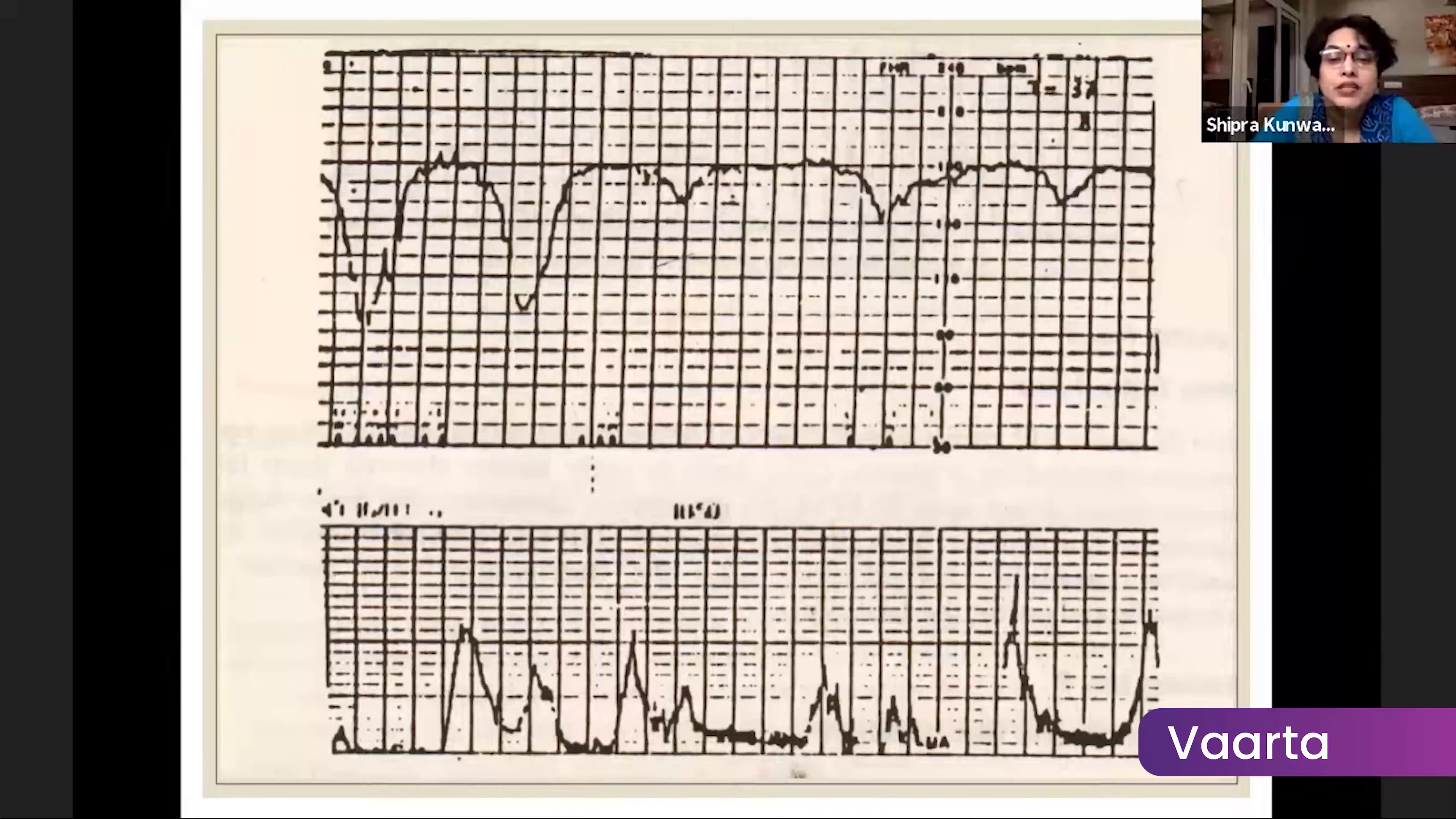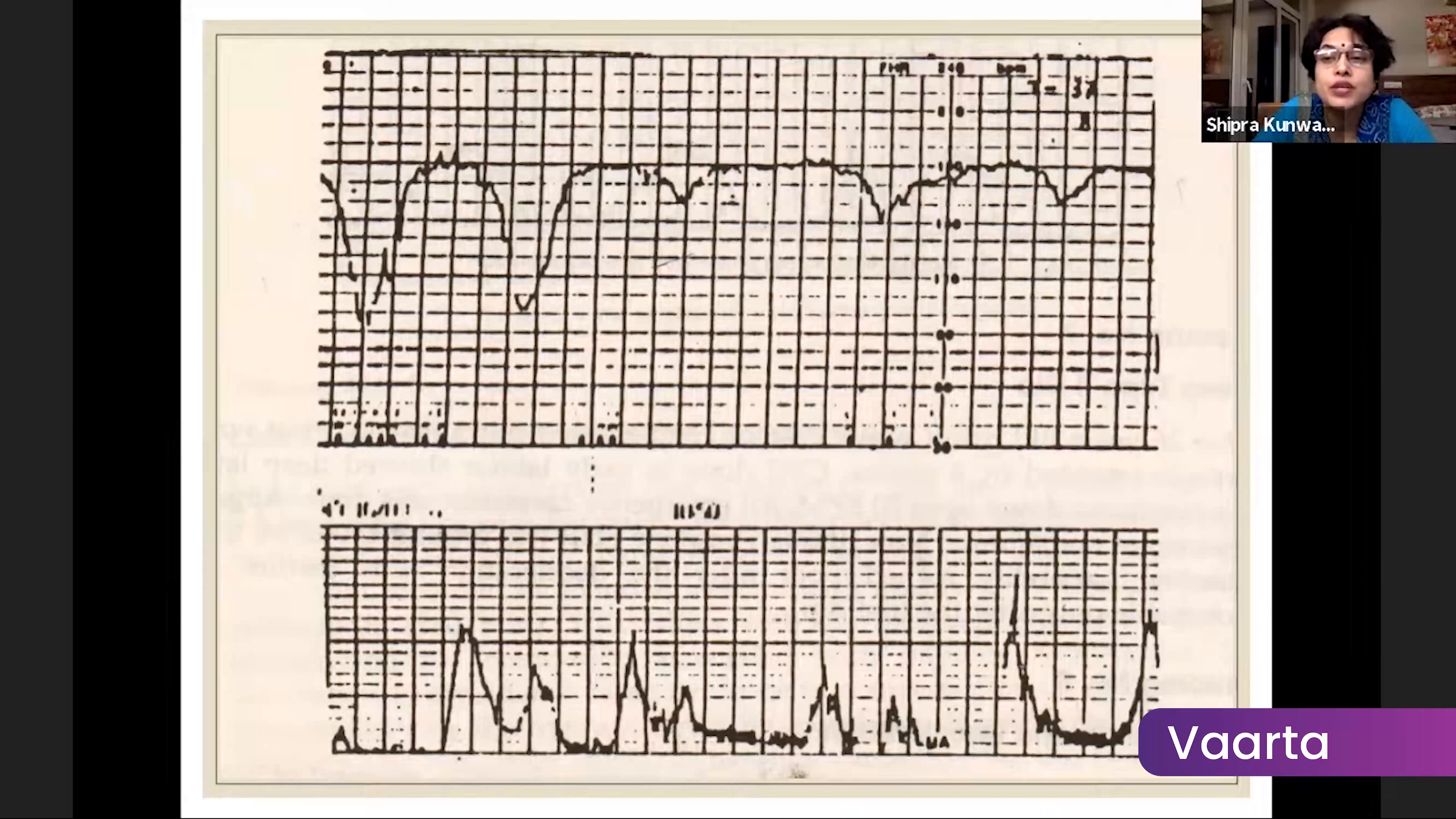These are variable decelerations and the variability is reduced. There are no shoulders, so it is a pathological CTG and we need to re-examine the patient.